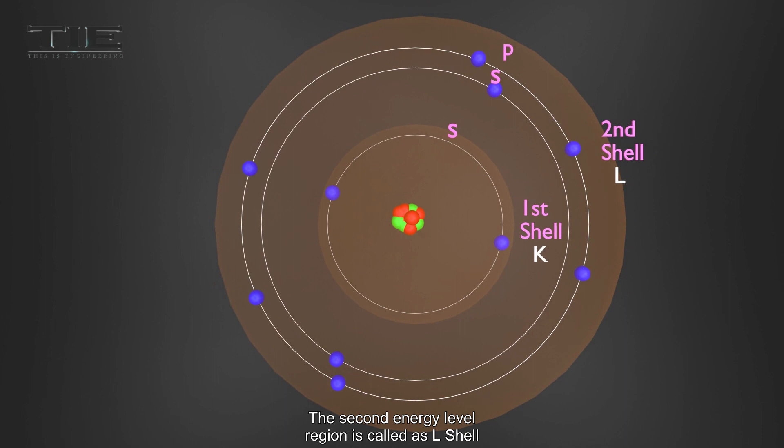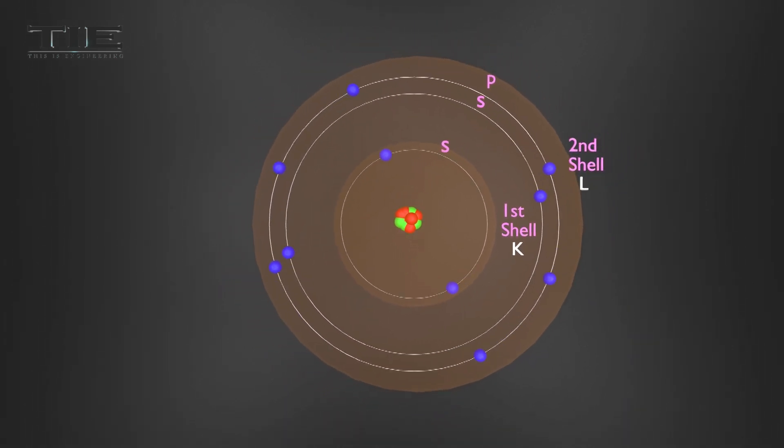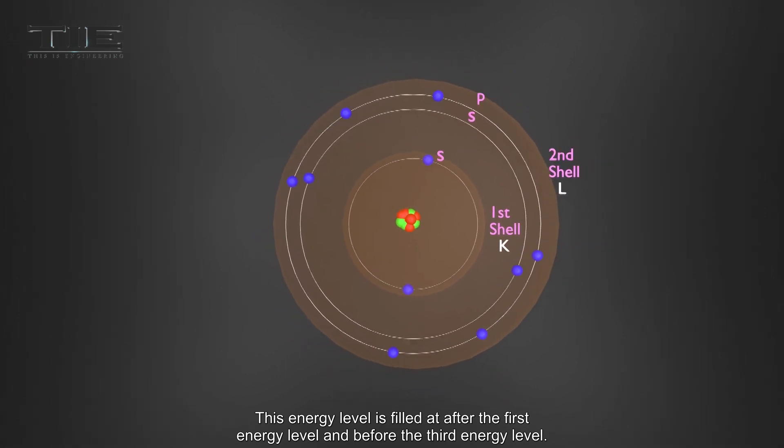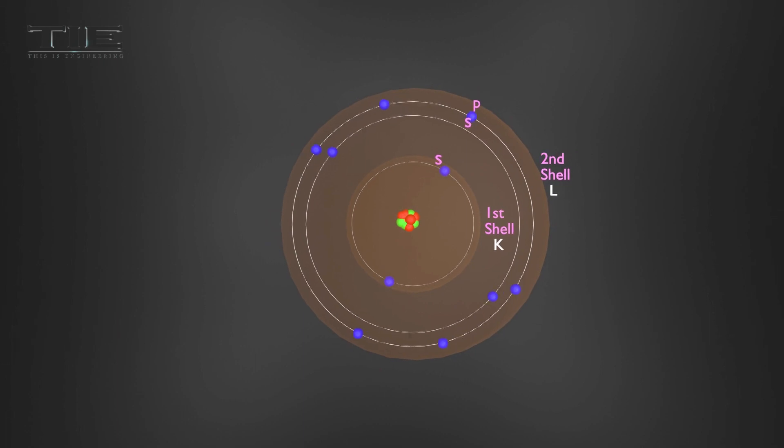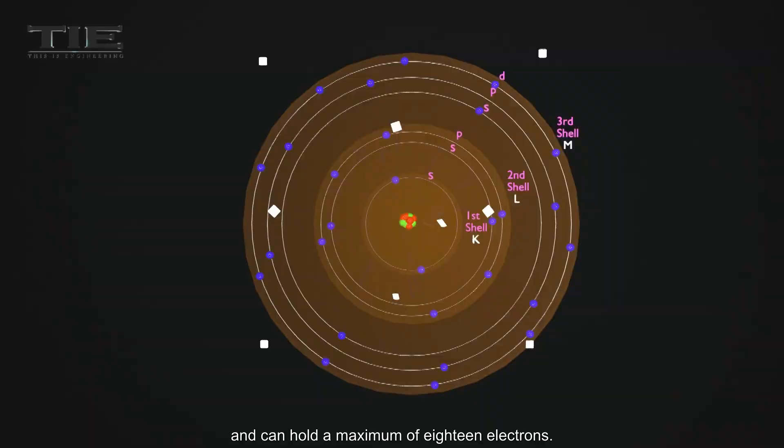The second energy level region is called the L-shell and can hold only eight electrons. This energy level is filled after the first energy level and before the third energy level. The third energy level is called the M-shell and can hold a maximum of 18 electrons.